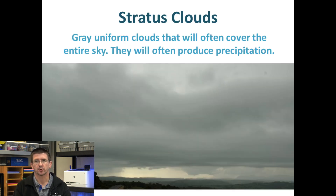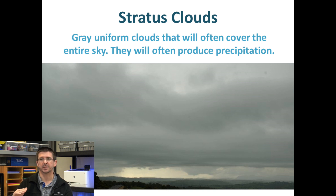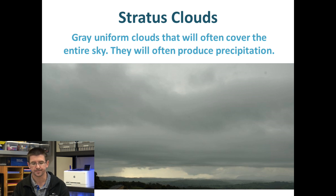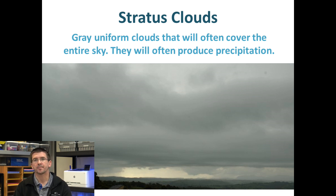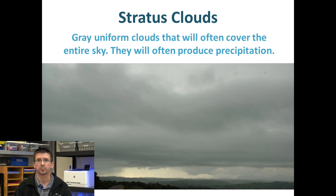Stratus clouds are long, gray, uniform clouds. They don't go very high into the atmosphere, but they stretch out along the way, and often they'll cover the entire sky. A lot of the time they might just result in a dark, cloudy day, but sometimes they can also produce some periods of steady precipitation.